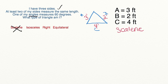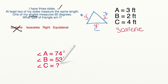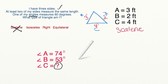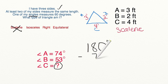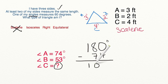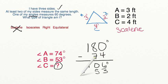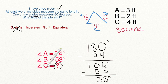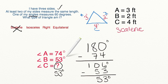Let's try another together. We have three different angle measurements on the screen, but we're missing one of our angles. Remember, the sum of all three angles in a triangle will always equal 180 degrees. So if we subtract our two known angles, that will tell us our missing angle. 180 degrees minus 74 degrees equals 106 degrees. Then we subtract angle B, which is 53 degrees: 106 degrees minus 53 degrees equals 53 degrees. That means our missing angle C has a value of 53 degrees. And if we notice that two of our angles have the same measurement, then we know that this is an isosceles triangle.